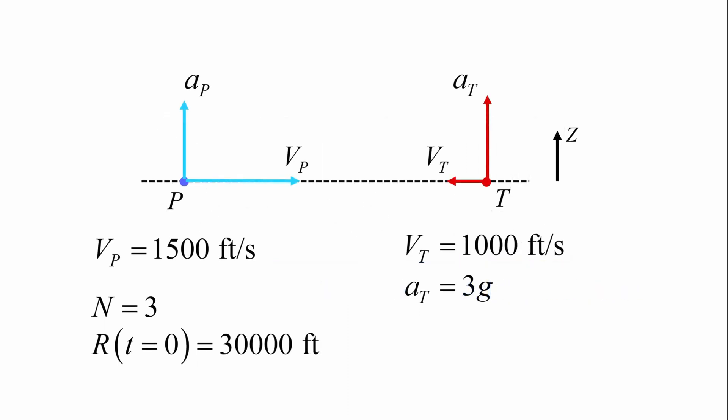Here we're going to look at true and augmented proportional navigation for a head-on engagement, the pursuer moving toward the target at 1,500 feet per second, the target toward the pursuer at 1,000 feet per second, the target pulls a hard 3G turn, navigation gain of 3, and an initial separation of 30,000 feet.